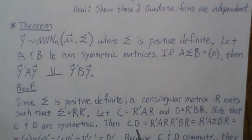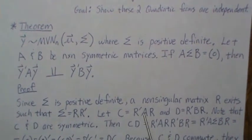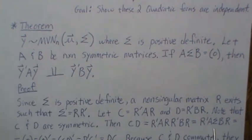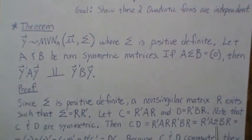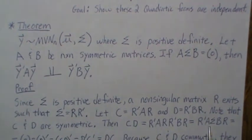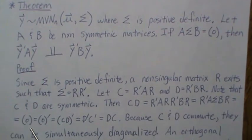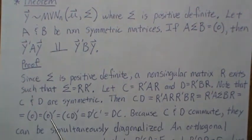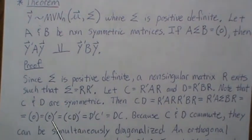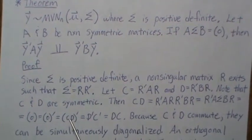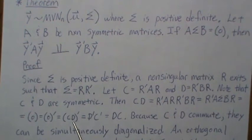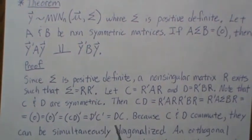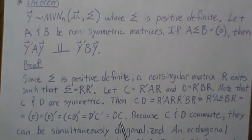Now let's look at C times D. If we plug in what C is and what D is, then this piece here, R R transpose, is Σ. But we're assuming that AΣB is zero, so this is zero. And since the zero matrix is symmetric, we can take the transpose of it, which means the zero matrix equals CD transpose. We can take the transpose into this, so it's D and C. But D and C were symmetric. So that says C times D is equal to D times C.